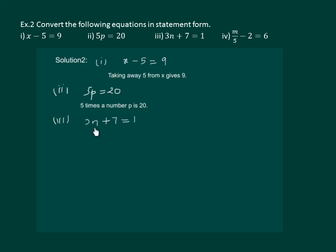3 times the number n plus 7 gives us 1. Or we can say add 7 to 3 times a number n and we get 1.